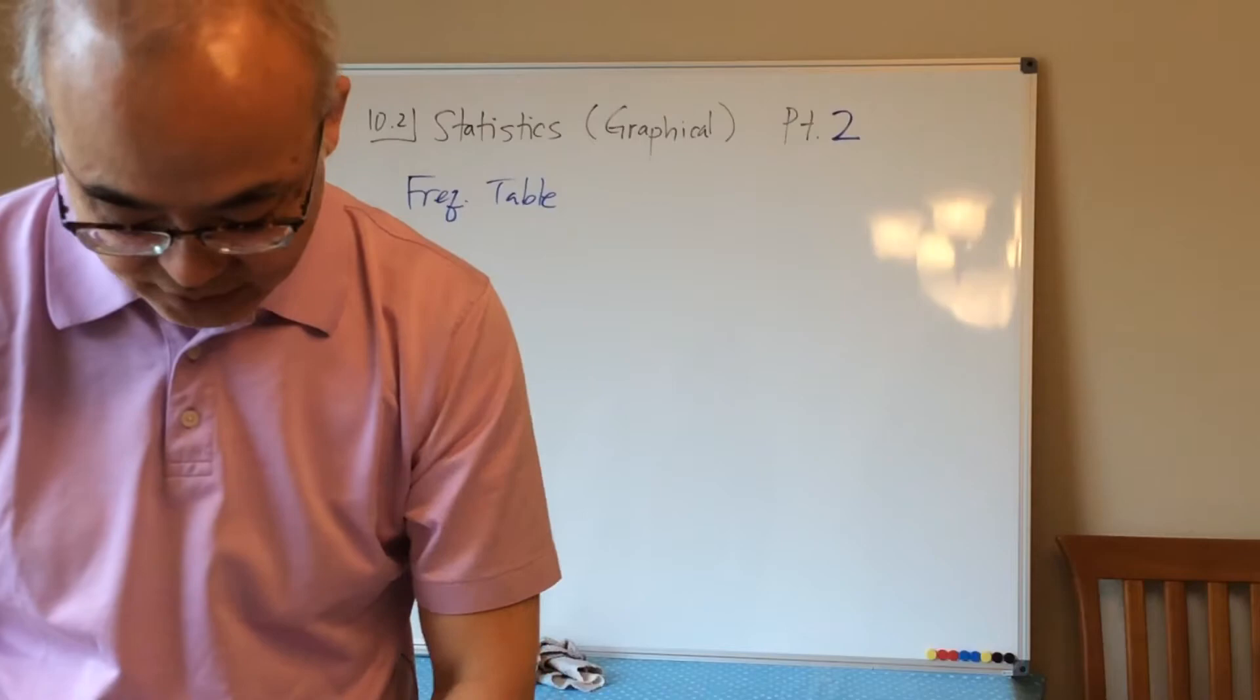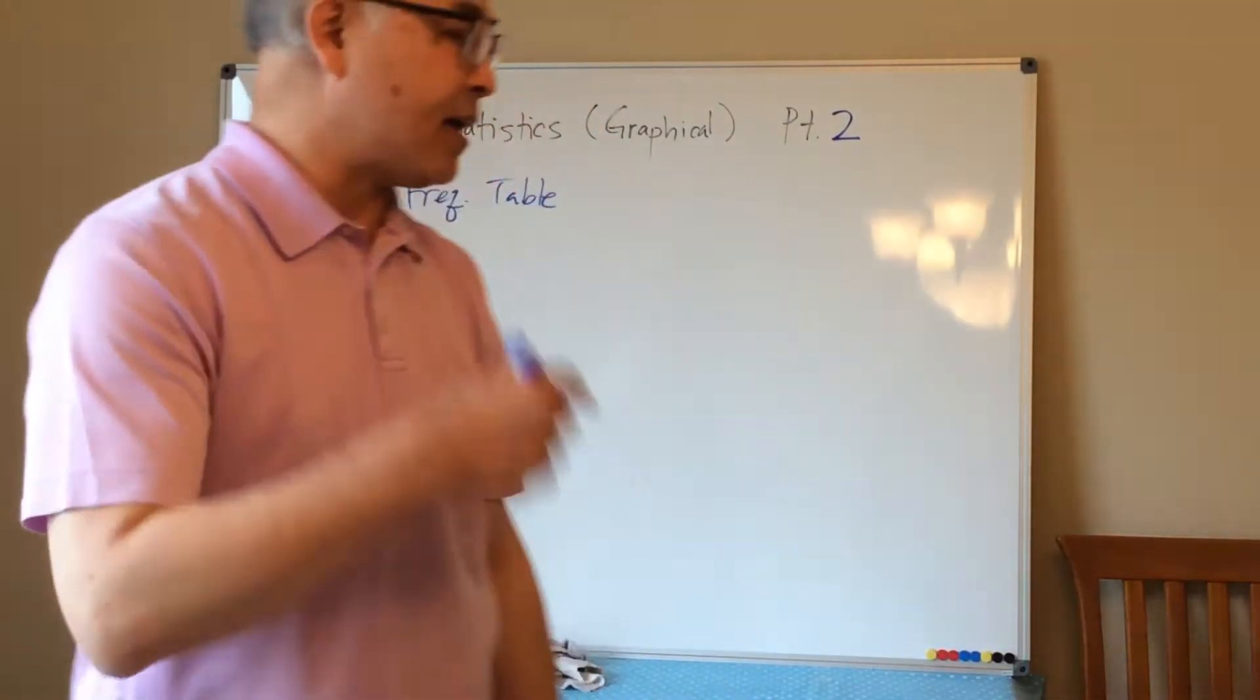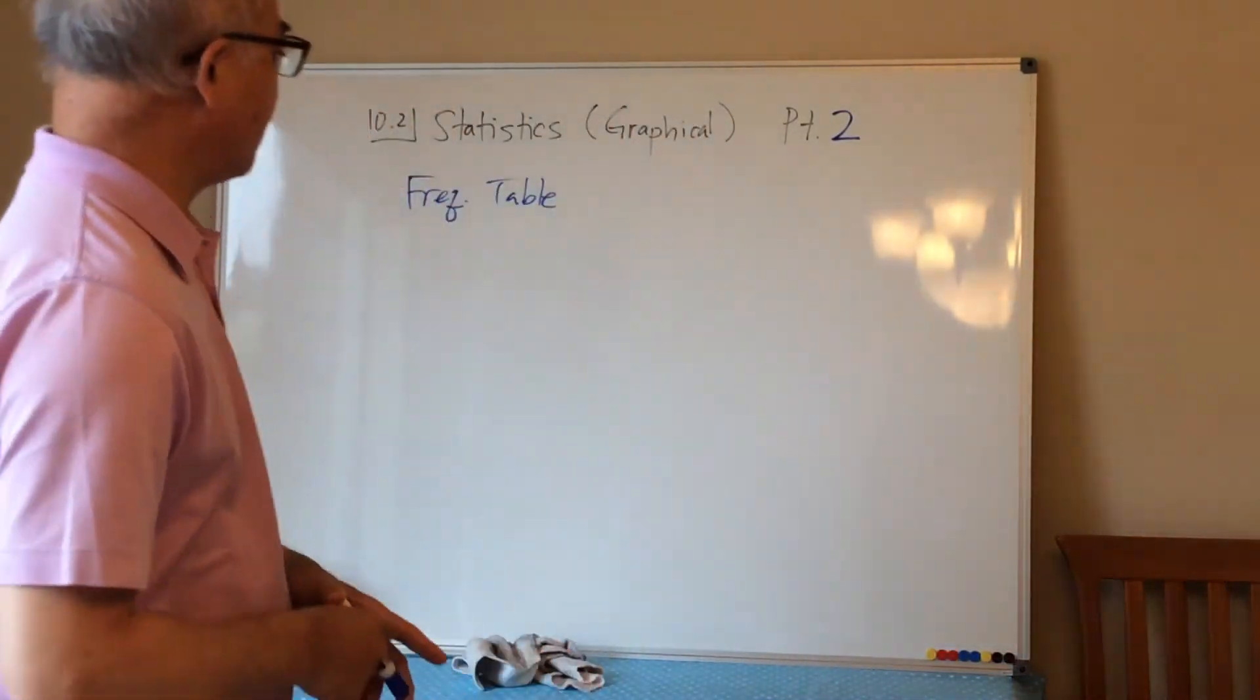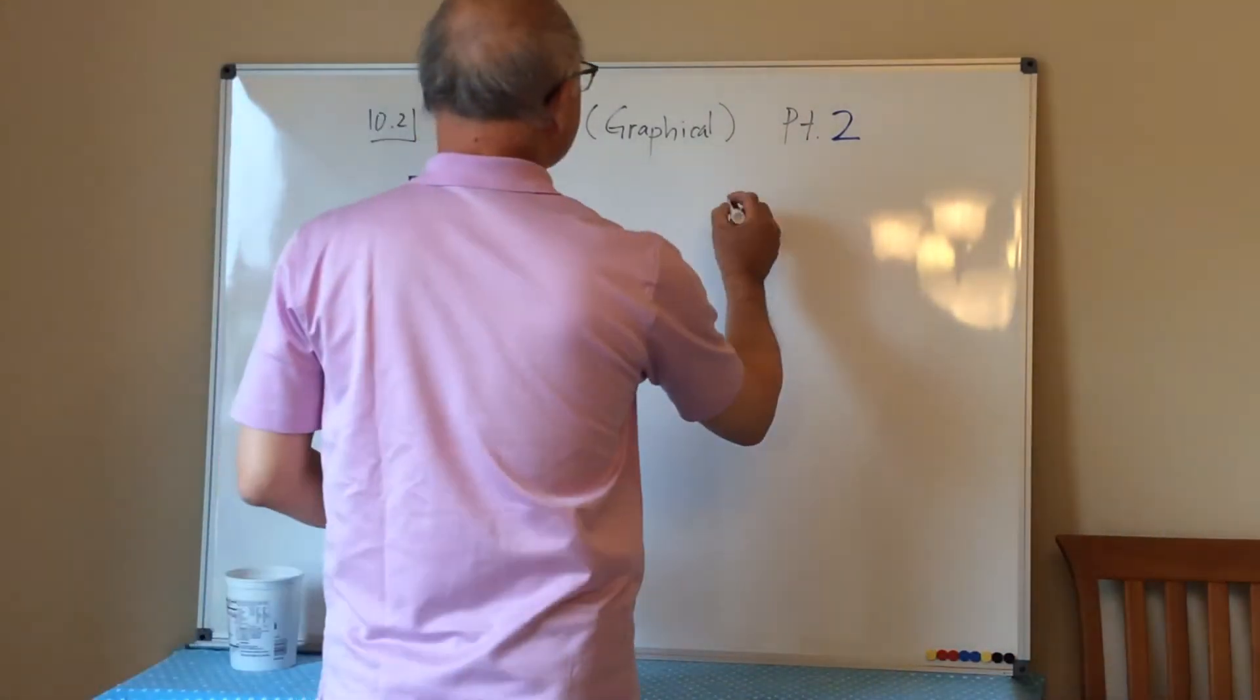They're going to be with quantitative data, just as your stem and leaf plots. So the frequency table, let's see how we build a frequency table. In order to draw a histogram, we're going to do a histogram.